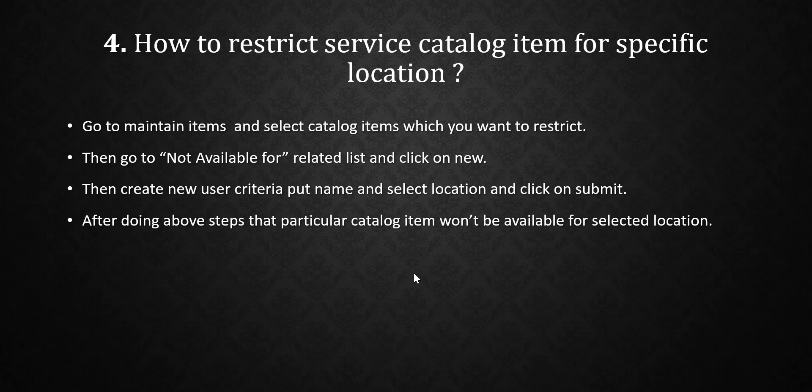The next question is: how to restrict a service catalog item for a specific location? This question is a little scenario-based, so if you have any hands-on practice, you'll be able to answer it. The answer is: firstly, in the filter navigator, we have to search for Maintain Items, then click on Maintain Items, and then select the appropriate catalog item which we want to restrict for that specific location.